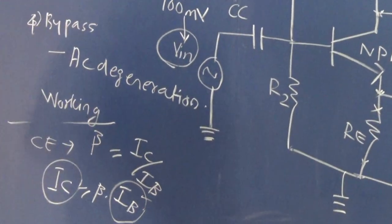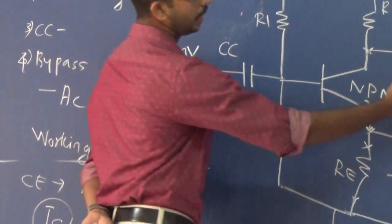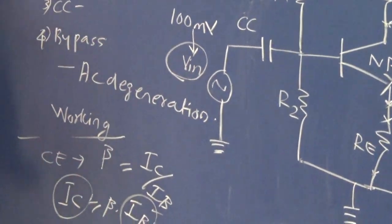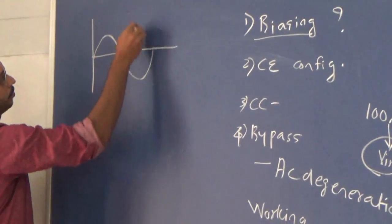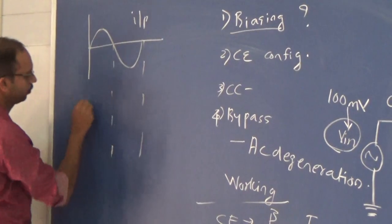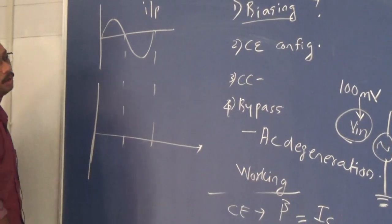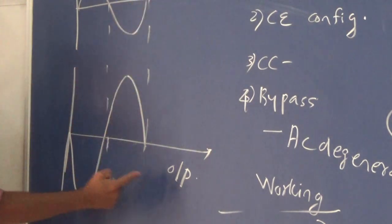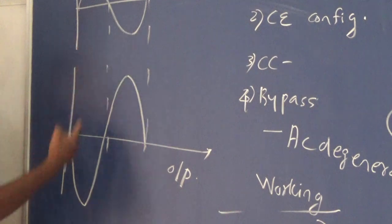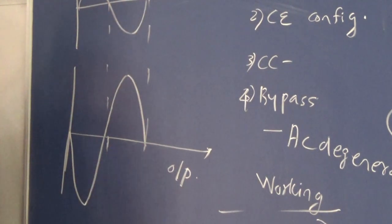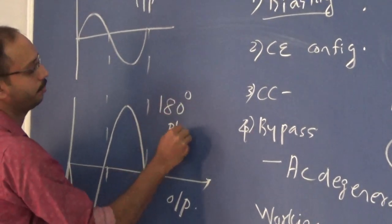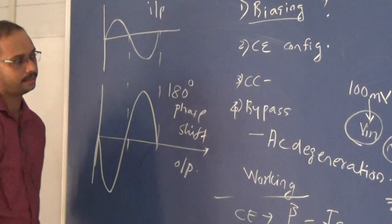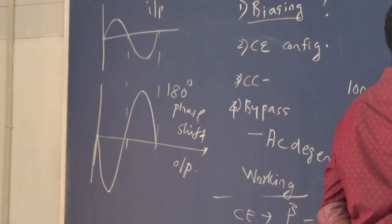Now I would like to explain the relationship between input voltage and output voltage. The input-output relationship shows that there is a 180-degree phase shift between the input and the output. To find the reason behind this phase shift, we need to consider the outer loop of this RC coupled amplifier and apply KVL.